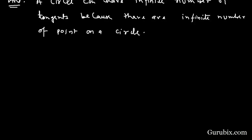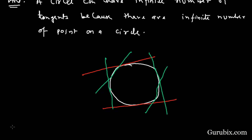And you can observe a tangent can be passed from this point or can be passed from this point, from here, from here, from here. There can be infinite number of tangents.